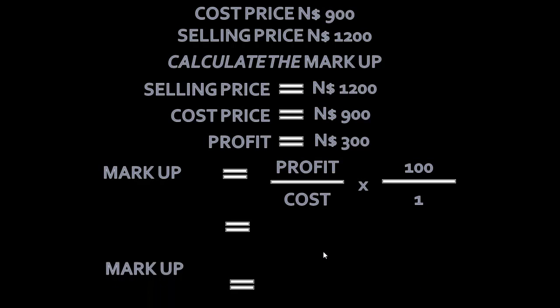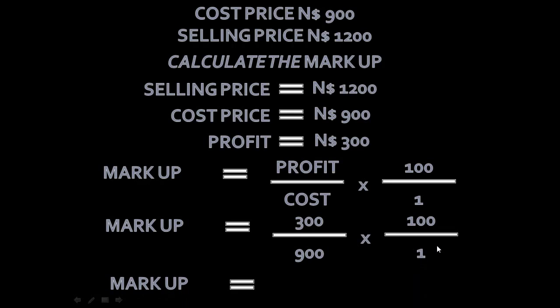Now we can rewrite the formula. The 300 over the 900 this time, not the 1,200 times 100 over 1. If you plug this into the calculator, you'll get an answer of 33.33%.